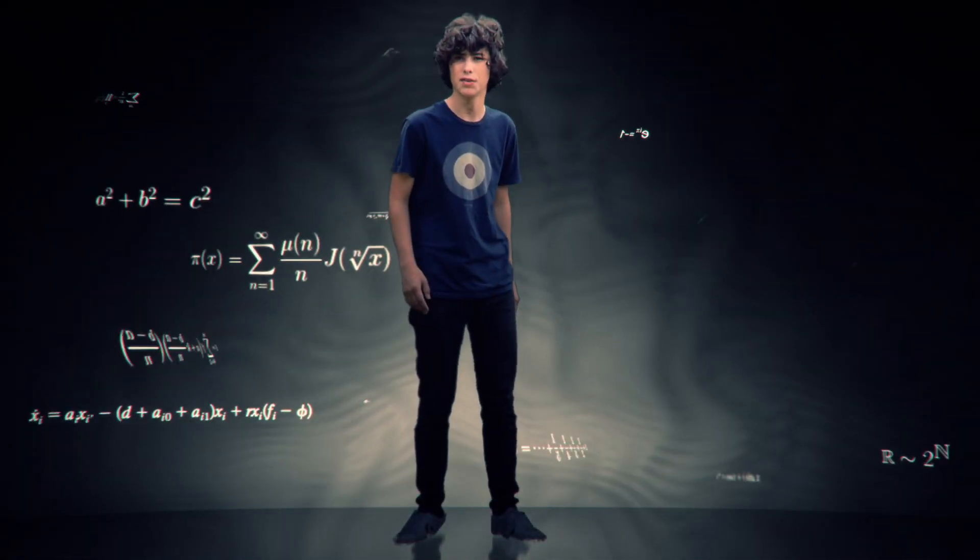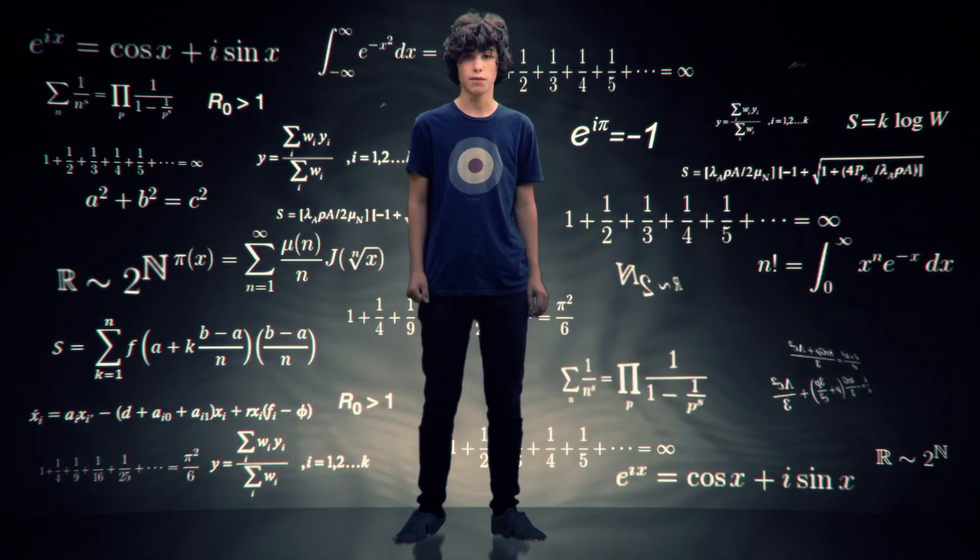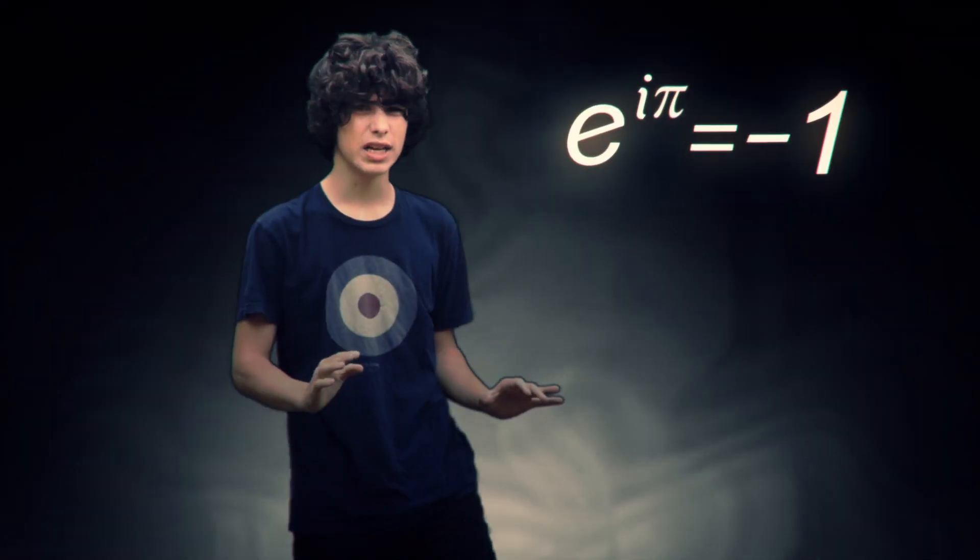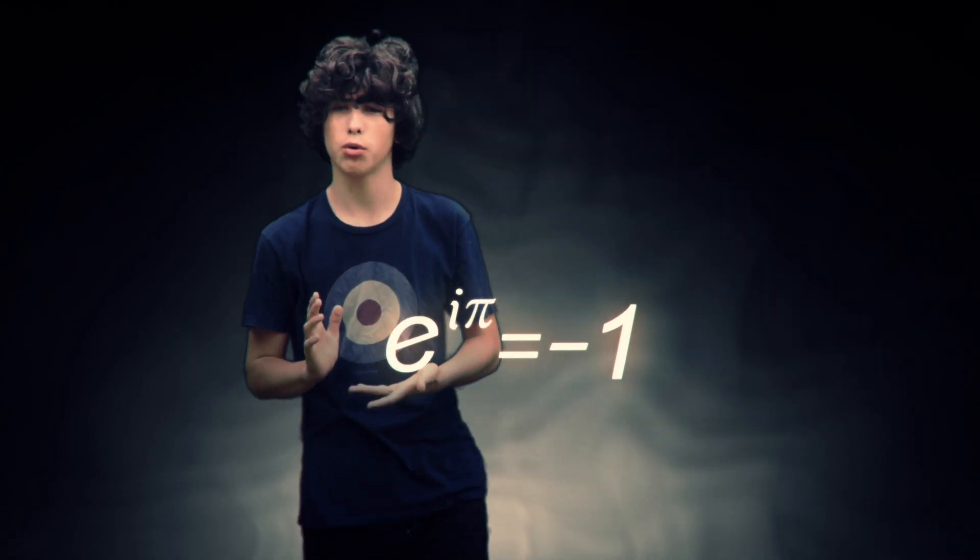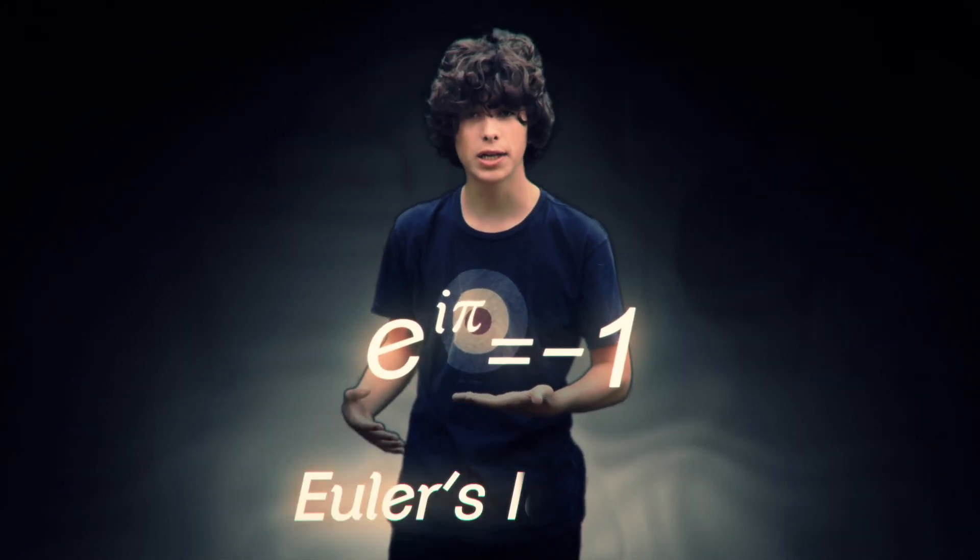Mathematics is a world full of equations, yet only a few stand out, and one is particularly elegant. e raised to the i pi equals negative 1, also called Euler's identity,